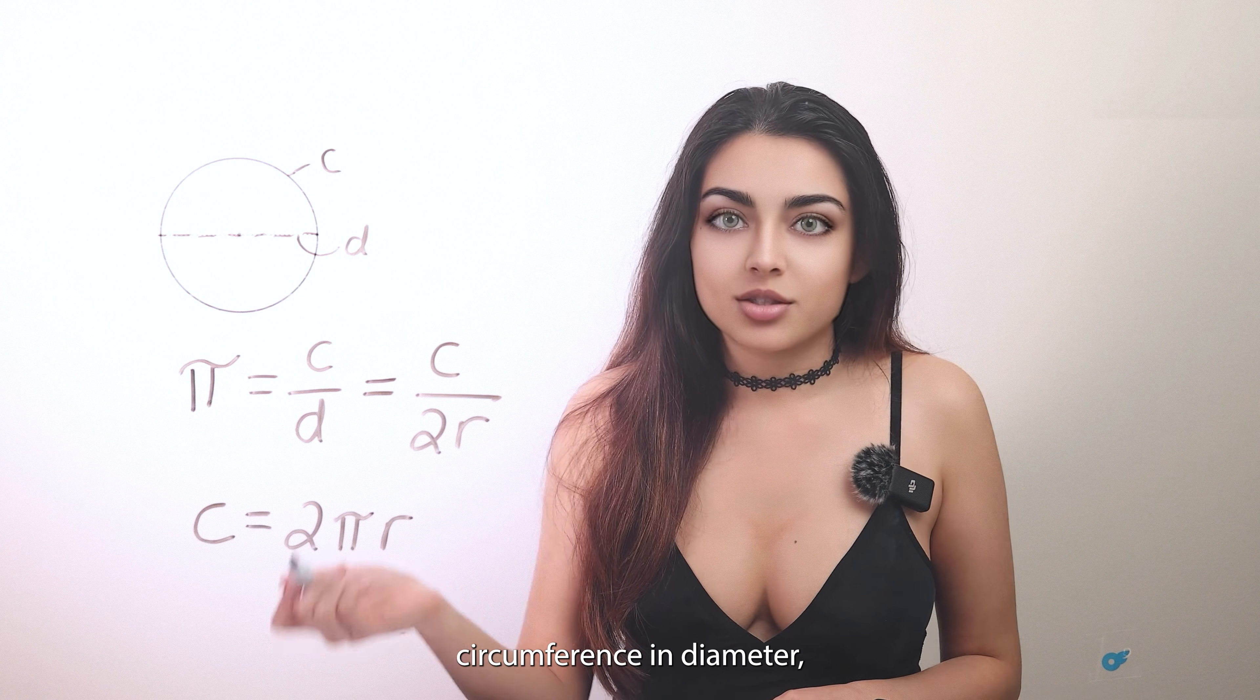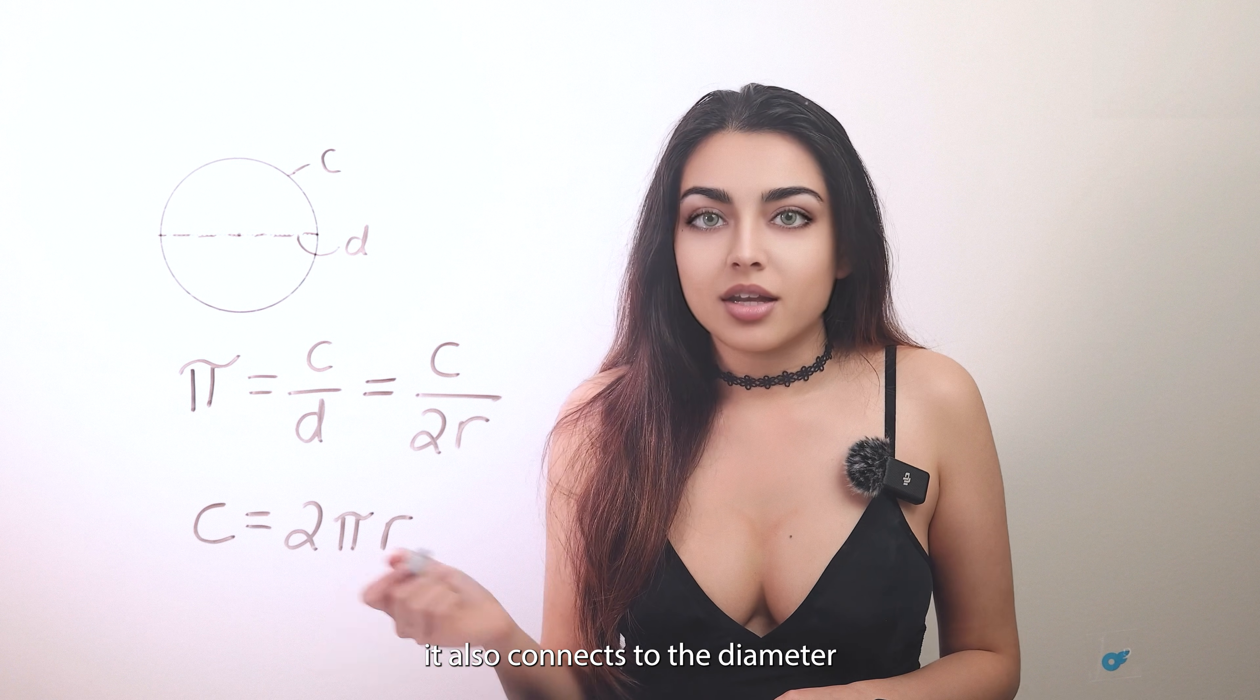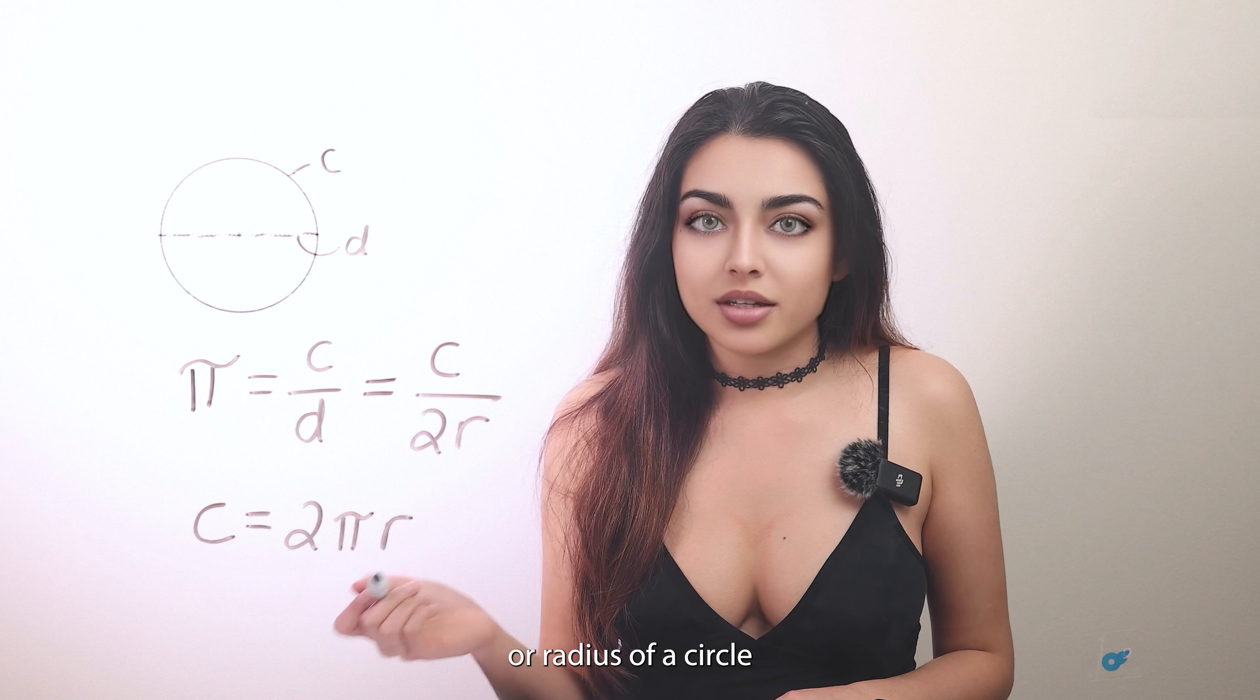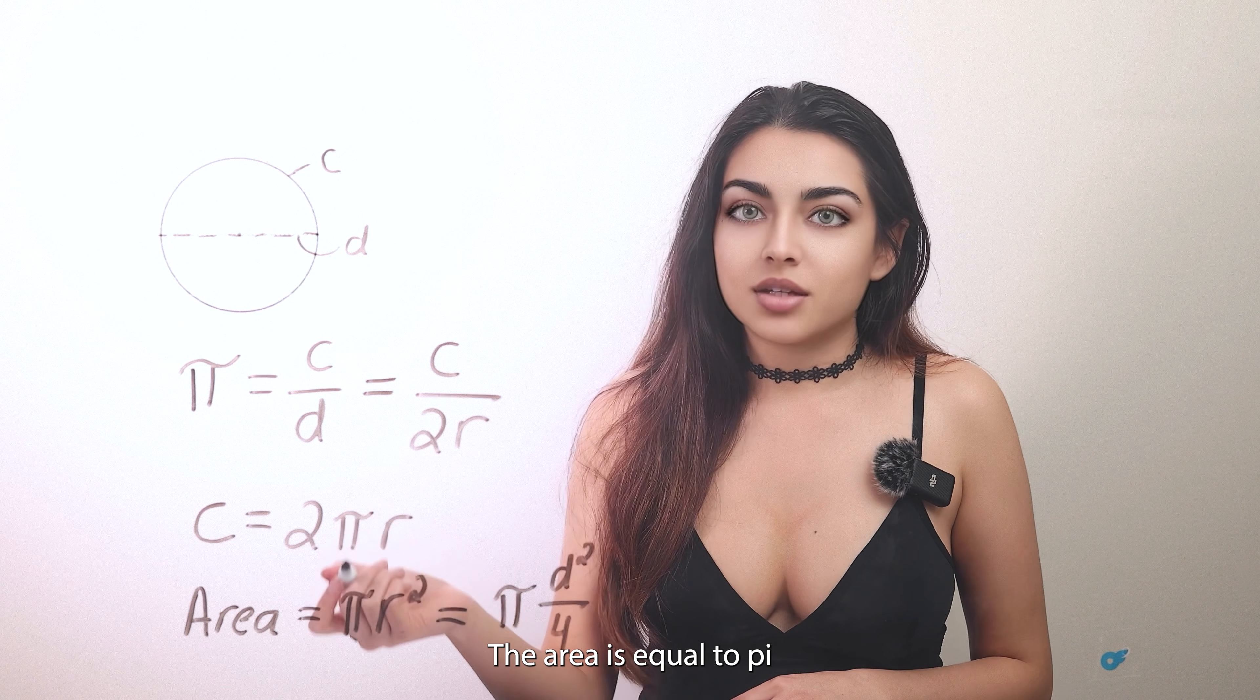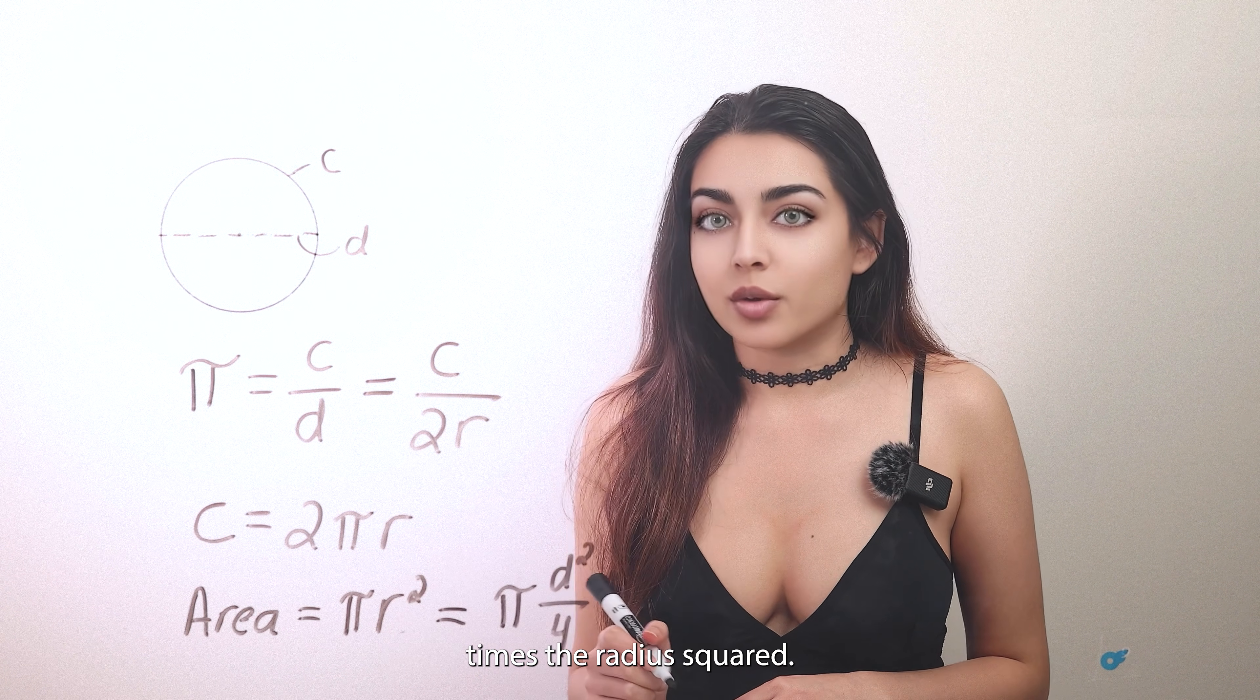Pi not only relates circumference and diameter, it also connects the diameter or radius of a circle with the area of the circle by the following formula. The area is equal to pi times the radius squared.